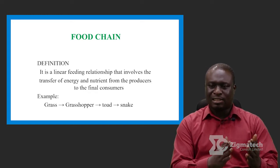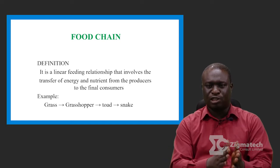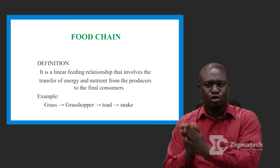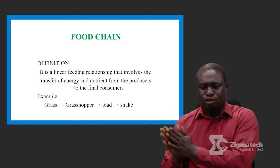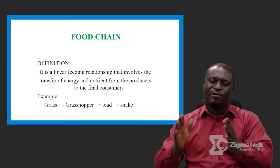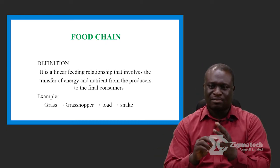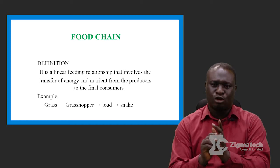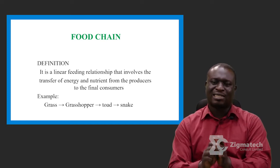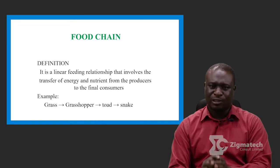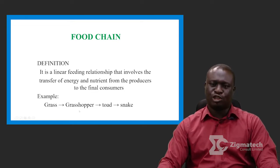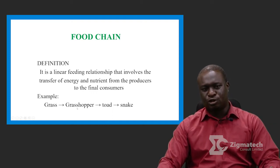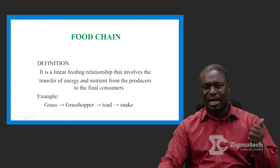As you can see in the example, the grass is being eaten by a grasshopper — there is a transfer of energy and nutrients. The grasshopper is being eaten by a toad, a transfer also of energy. And the toad is then eaten by a snake. So: the grass serves as the producer, the grasshopper serves as a primary consumer, the toad serves as a secondary consumer, and the snake serves as a tertiary consumer.